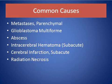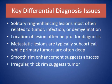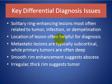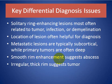Key differential diagnostic issues: solitary ring-enhancing lesions are most often related to tumor, infection, or demyelination. Location of the lesion is often helpful for diagnosis. Metastatic lesions are typically subcortical, while primary tumors are often deep. A smooth rim enhancement suggests abscess; an irregular thick rim suggests a tumor.